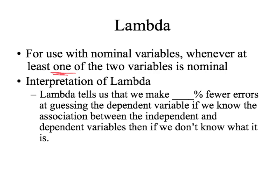So how do we interpret lambda? Lambda is a proportional way of thinking. The number we calculate for lambda can be turned into a percent by multiplying by 100. Lambda tells us that we make fewer errors at guessing the dependent variable — by whatever the lambda value is — if we know the association between the two variables than if we don't. Basically, lambda tells us how much better we are at guessing the dependent variable if we know the independent variable.